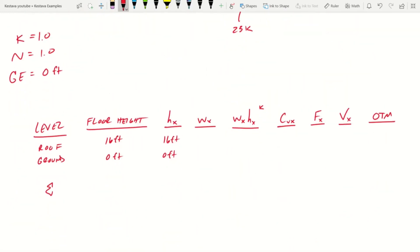So what that means, my side tangent, wx for the roof is 105 kips. And for the ground is 23 kips. Next is wxhx raised to the k. You're like, where's that coming from? Let's flip back over to our code.